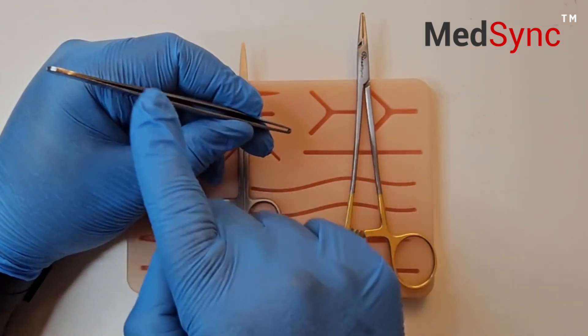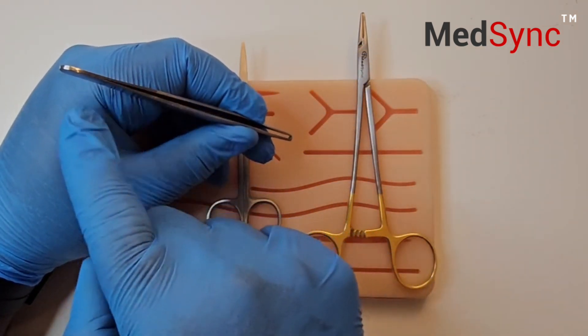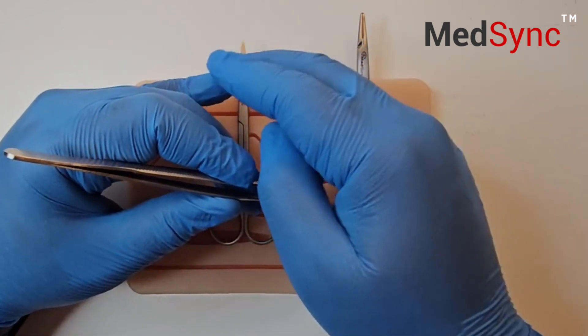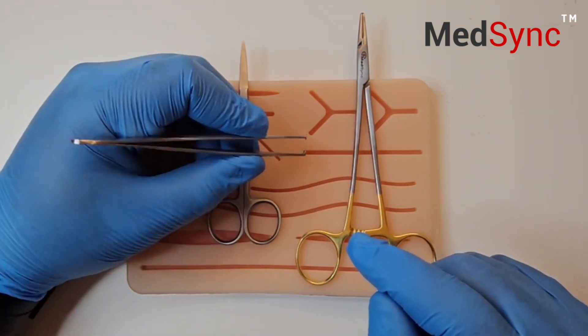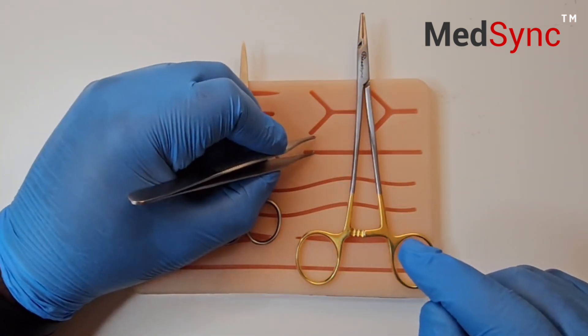Try like this with the body of the forceps above your index finger. Little finger can be used for stability and you simply lift up the skin edge.